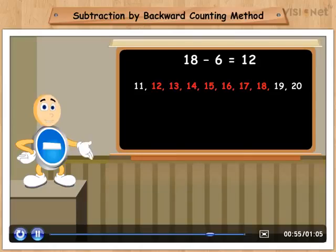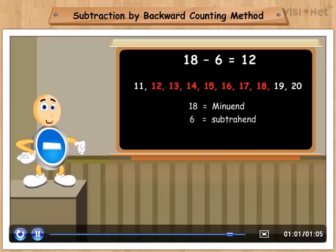Thus 18 minus 6 is equal to 12. In this expression, 18 is the minuend, 6 is the subtrahend and 12 is the difference.